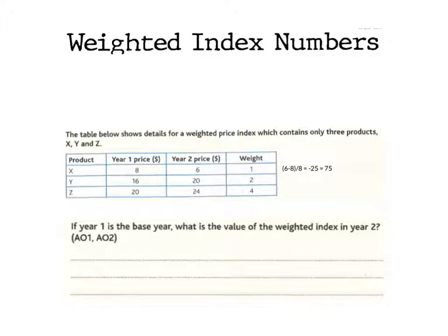What we do is six minus eight, then divide by the original which is eight, and that would lead to minus 0.25. Times by a hundred and you'd get minus 25. Turn it into an index so we'd minus that from the hundred - so a hundred minus 25 gives us an index of 75.